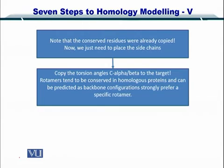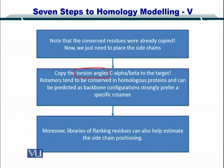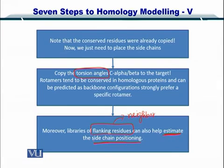The method is very simple. We insert these side chains by copying the torsion angles — that is, the alpha carbon and beta carbon angles — to the target. Rotamers tend to conserve these angles, and I will show you an example of how rotamers conserve these angles in homologous proteins. Because of that, there are certain preferences of amino acids, and libraries have been built to show which flanking residue — that is, the neighboring residue — can be used to estimate the side chain position.